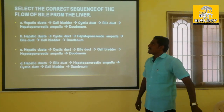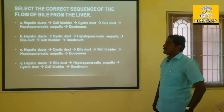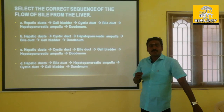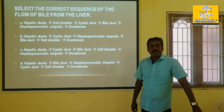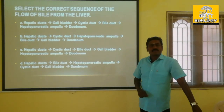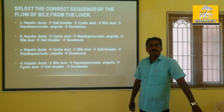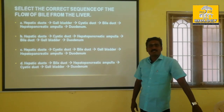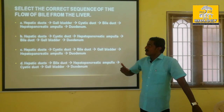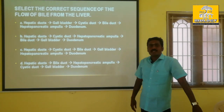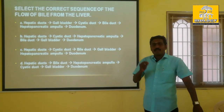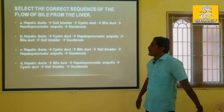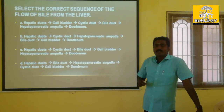Select the sequence of the flow of bile from the liver. Bile juice is a combination of enzymes produced in the liver, and it will be reaching on to the duodenum. The liver produces bile juice that travels to the duodenum.